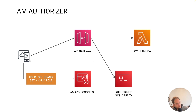Going through the flow diagram: a user logs in, gets a valid role from Cognito for IAM, and then uses those credentials to send the request to the API Gateway. The API Gateway checks the authorization using the IAM service, and if everything is successful it calls the integration service — in this case, a Lambda function.